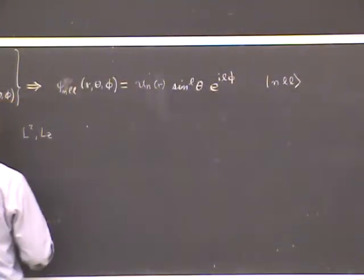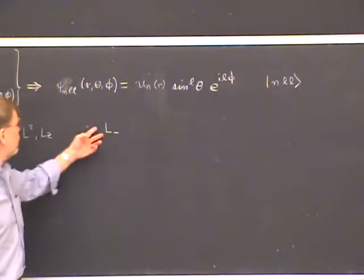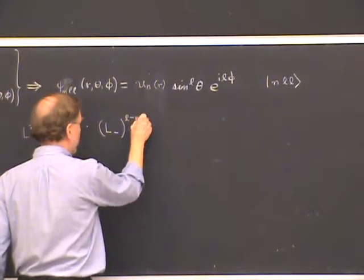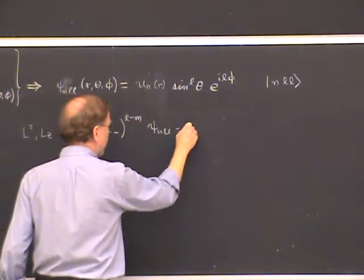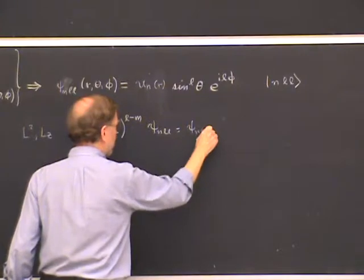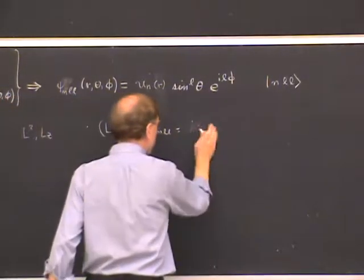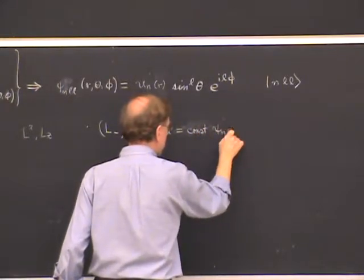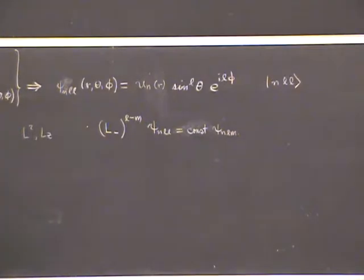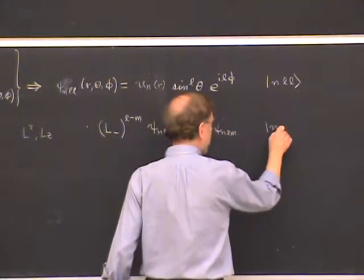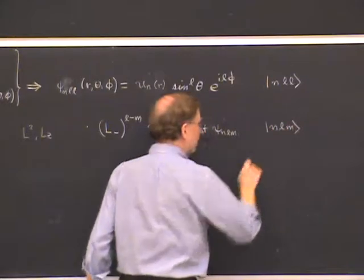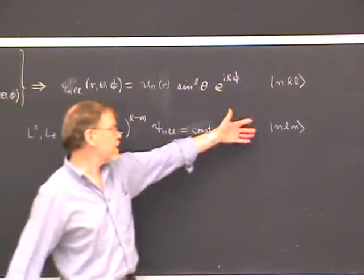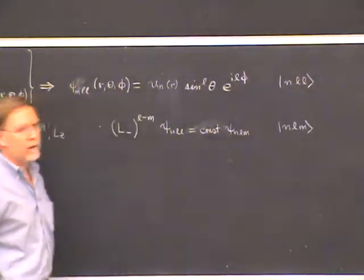Having obtained that, we can apply the lowering operator L- to lower the magnetic quantum number. Applying L-^(L-M) to psi_nLL gives psi_nLM, times a constant involving factorials. Within a constant, it lowers to an arbitrary magnetic quantum number psi_nLM, which in ket language we write as |n, L, M⟩. This gives a unique specification of basis states — an example of a standard angular momentum basis. The general notation is |gamma, J, M⟩ where gamma stands for any extra quantum numbers, here the radial quantum number, and J equals L.